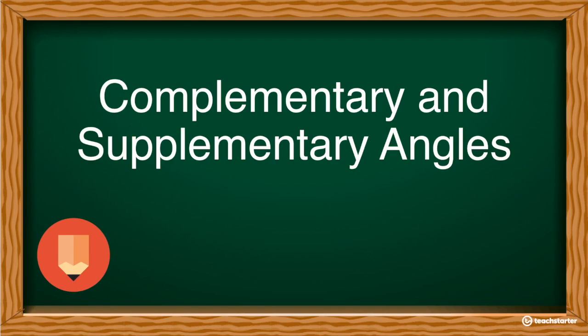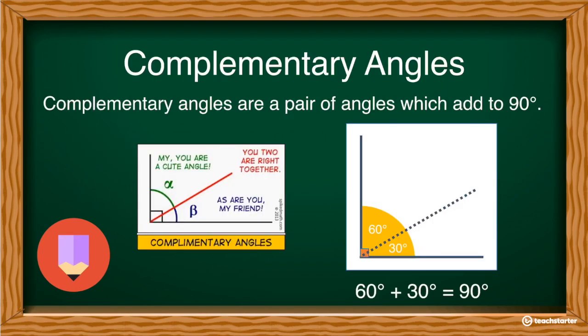Now I found this cute little meme to kind of help you. Here it says, my you are a cute angle, which is kind of like an acute angle. And this one says, as are you my friend, and it says you two are right together. Look, the right is the right angle. So two complementary angles make a right angle which adds up to 90.